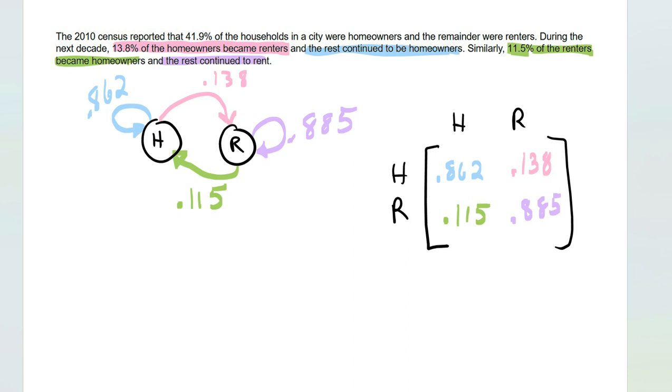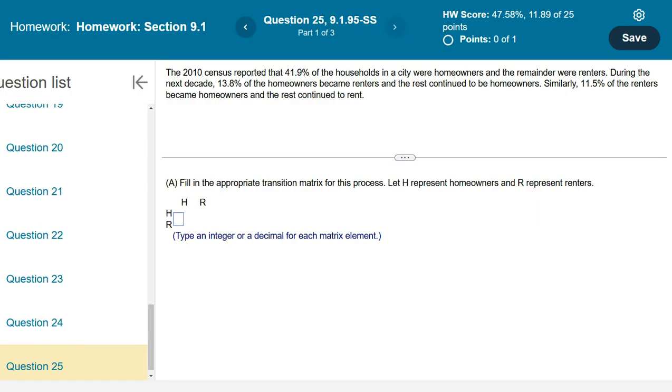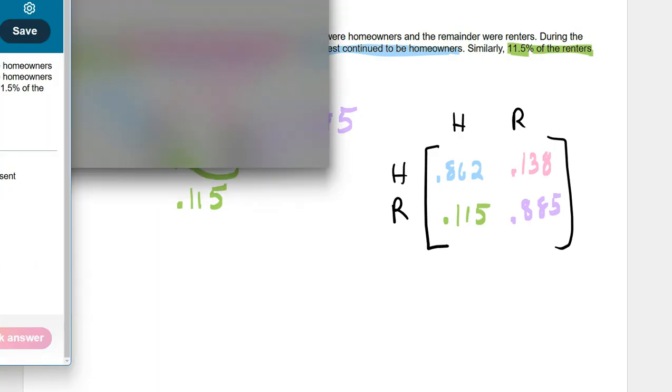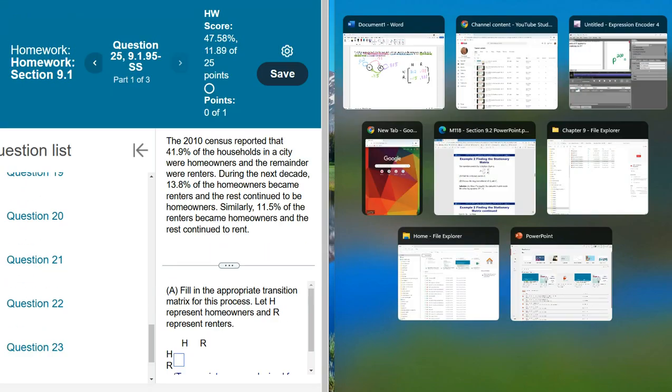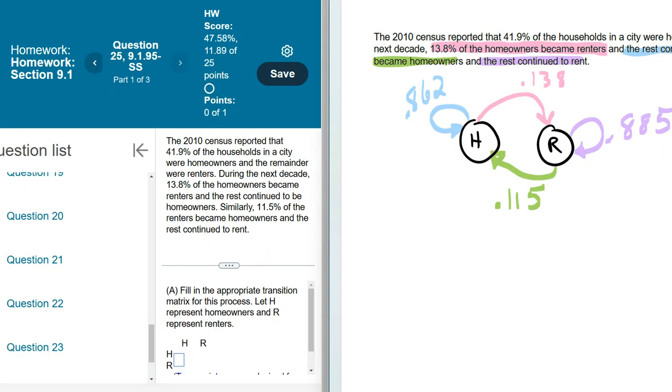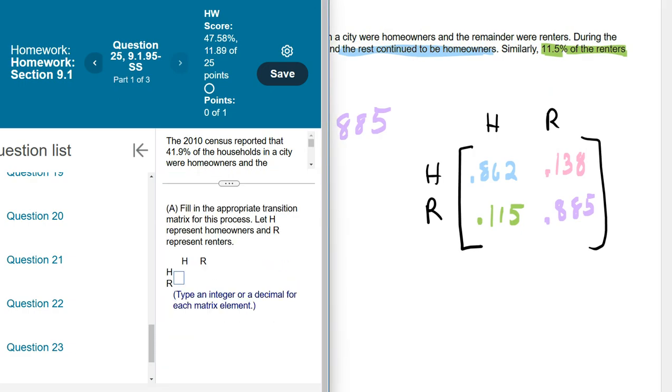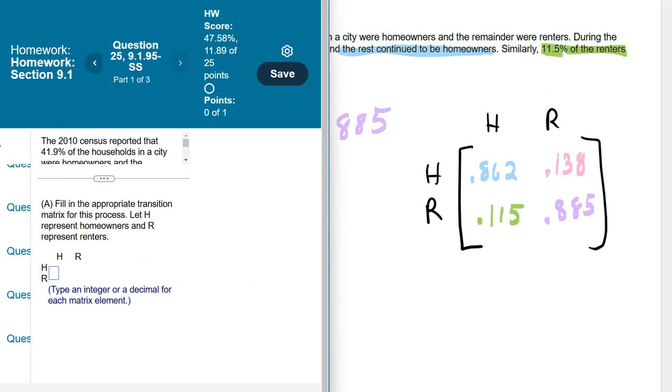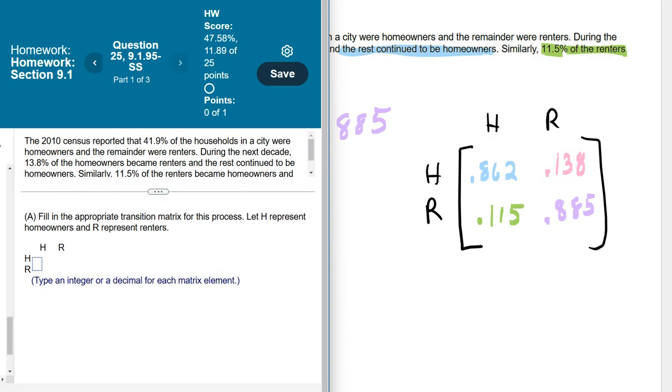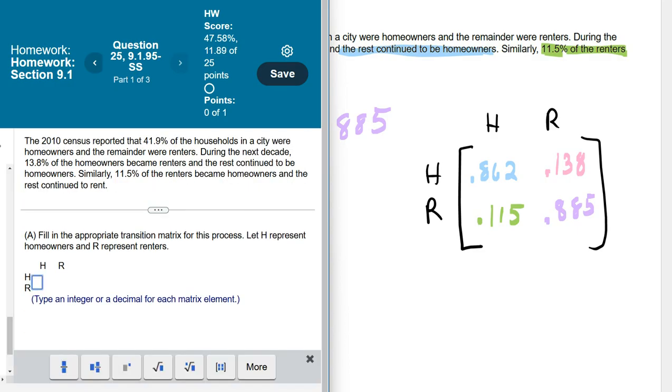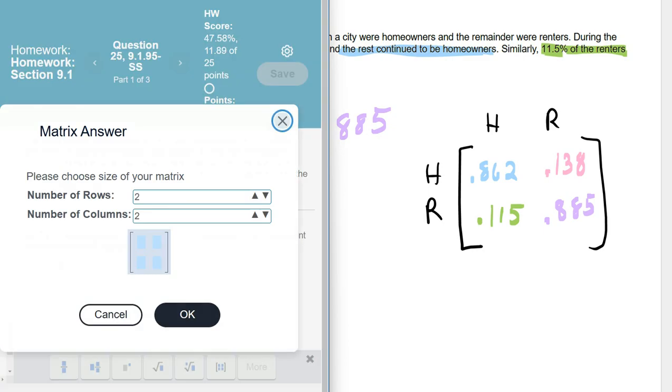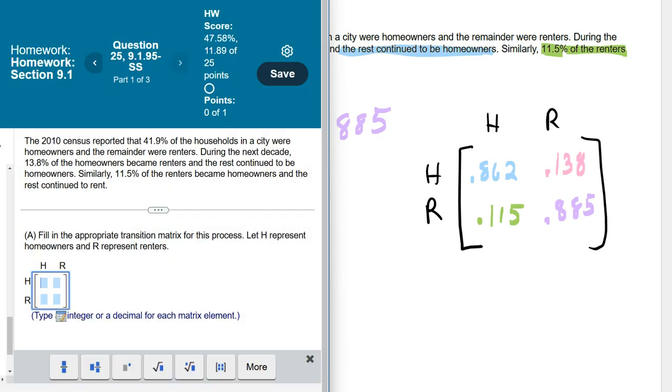So the first part of my MyMathLab says, fill in the appropriate transition matrix for this Markov process. I need to do a matrix that is 2 by 2. We're good to go.